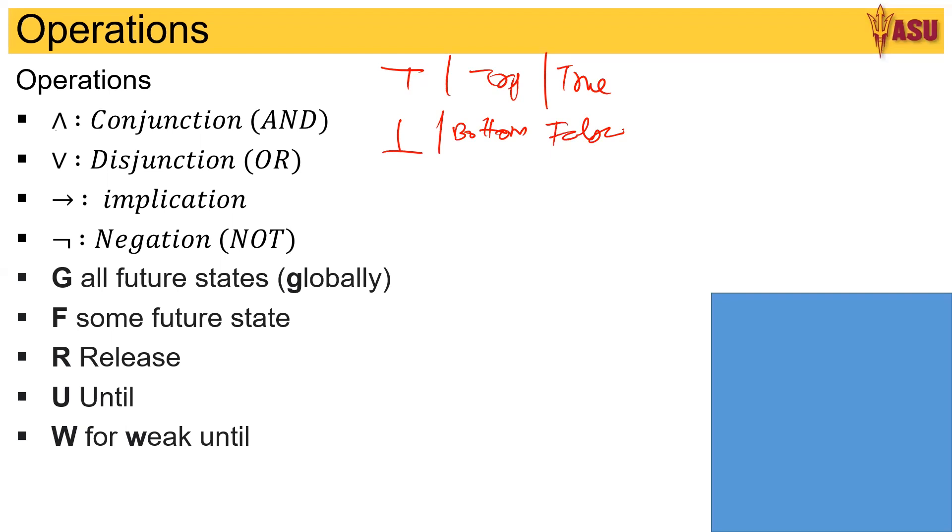The new additional symbols that we use in model verification are G which stands for all future states, F which stands for some future state, R release, U is until, and W is weak until. Look at the video from Section 3.2 to get a better idea of what these are.